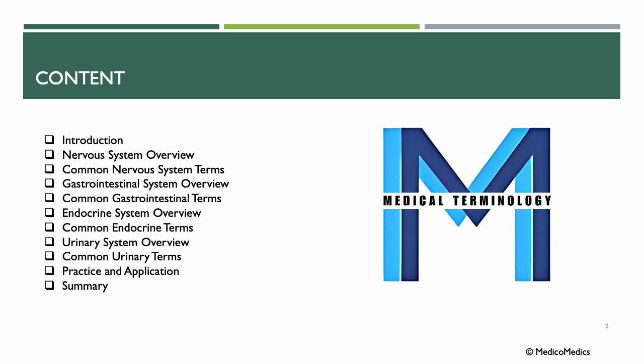In this lecture, we will discuss a brief overview of the nervous system, common nervous system terms, the GI tract or the GI system, the endocrine system, and the urinary system. We will do a practice and application run and end with a summary.